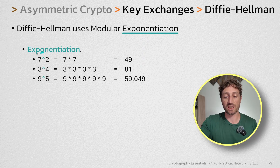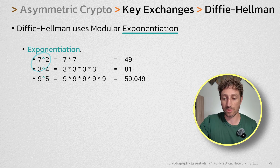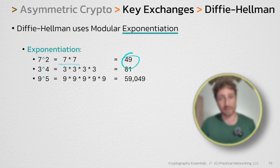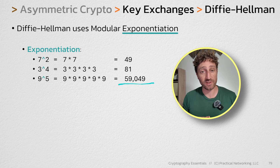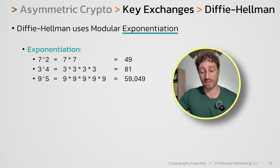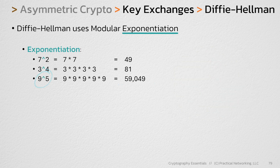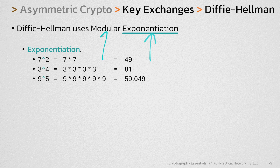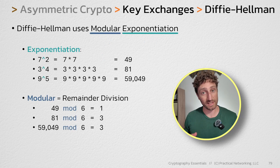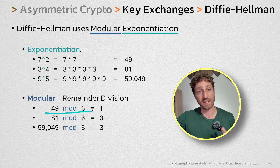Exponentiation is raising something to the power of something else. For instance, you could take 7 and raise it to the power of 2 — that's 7 times 7 which gets you 49. You could take 3 and raise it to the 4th power — that's 3 times 3 times 3 times 3 which gets you 81. Or you can take 9 and multiply it with itself 5 times and that'll get you 59,049. Notice how quickly you can get to very big numbers with exponentiation even though you're starting with relatively smaller numbers.